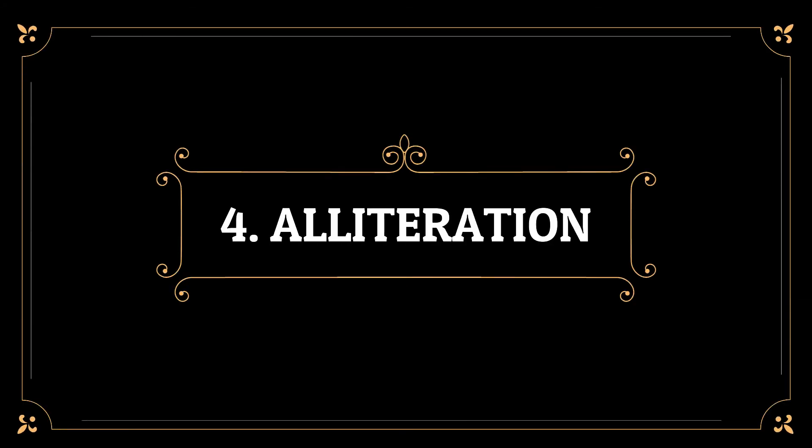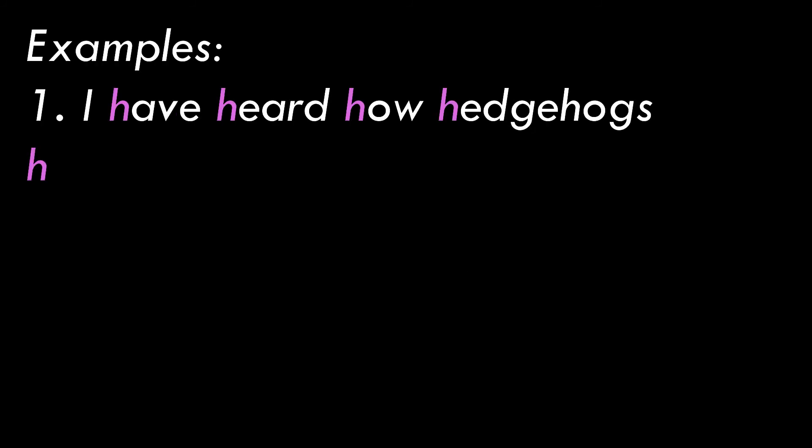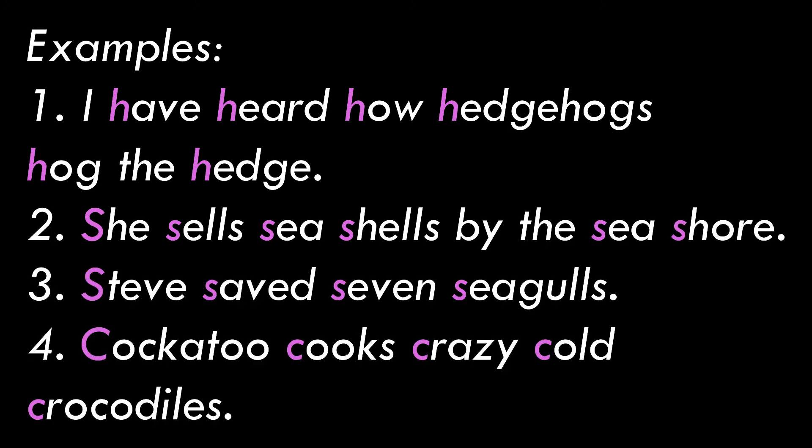The next type is alliteration. Alliteration is the repetition of a speech sound in a sequence of words. The best examples of alliteration are tongue twisters, and it is also known as head rhyme or initial rhyme. Examples: 'I have heard how hedgehogs hog the hedge.' 'She sells seashells by the seashore.' 'Steve saved seven seagulls.' 'Kukatu cooks crazy cold crocodiles.' All these tongue twisters are examples of alliteration.